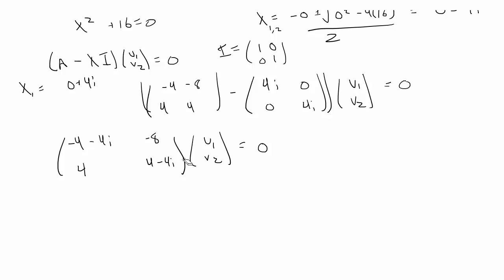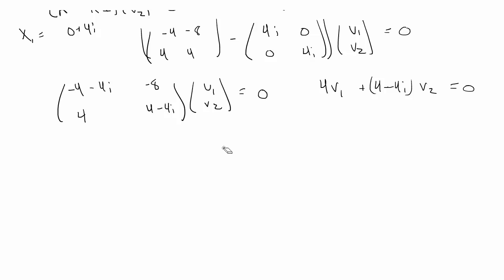Using the second row, we get the equation 4v1 + (4 minus 4i)v2 = 0. We plug in v2 = 1, which gives negative 4 + 4i = 4v1, so v1 = negative 1 + i. So when v2 is 1, the second row gives us that v1 equals negative 1 plus i.